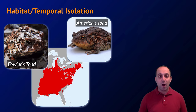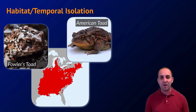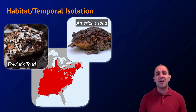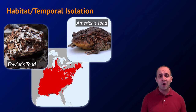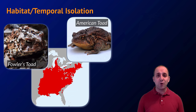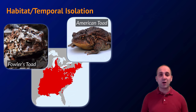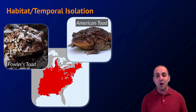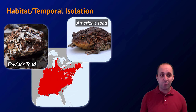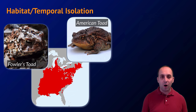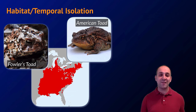The first prezygotic barrier is habitat isolation. The American toad and Fowler's toad have overlapping habitats, but one is reproductively active in the spring and the other in the late summer or fall. Since they're reproductively active at different times of year, they do not reproduce with each other — they're reproductively isolated, and as a result they are separate species. That's habitat, or temporal, isolation.